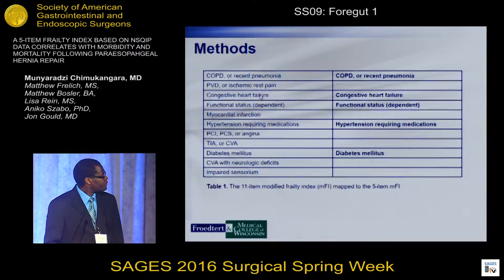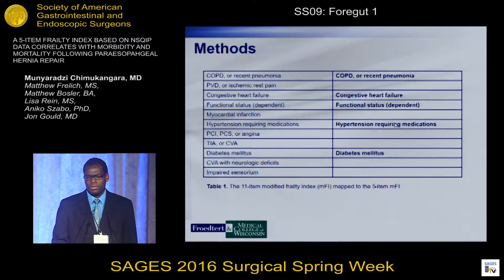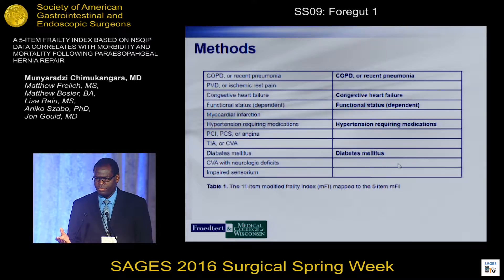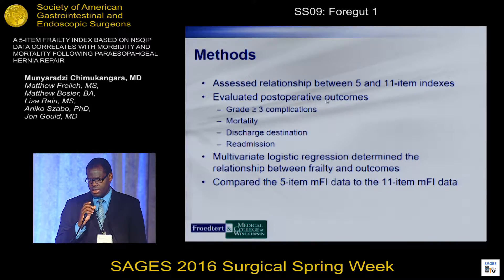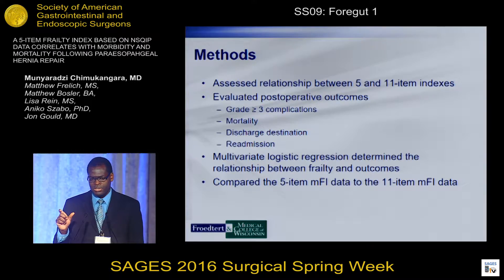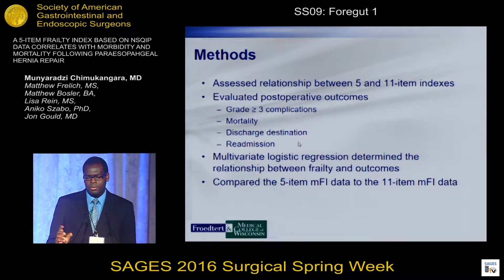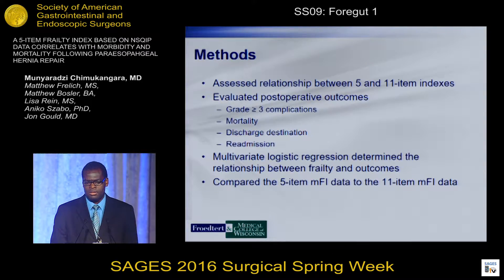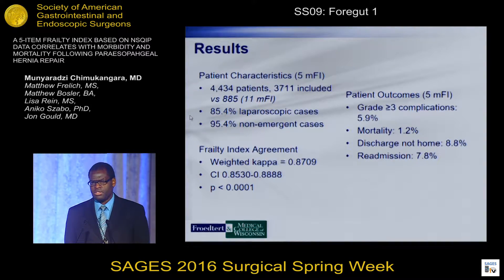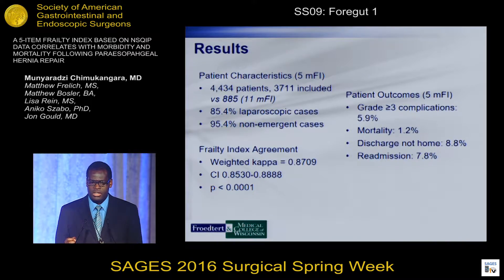On the left side you can see the variables in the 11-item index; on the right side, the new five condensed variables. If a patient had all five of these, they would have a frailty score of five. We assessed how the 5-item data compared to the 11-item data and the agreement between these indexes. By patient characteristics, we ended up including 84 percent of patients in the new condensed index versus only 20 percent in the 11-item index. The majority of patients were laparoscopic cases in a non-emergent setting.